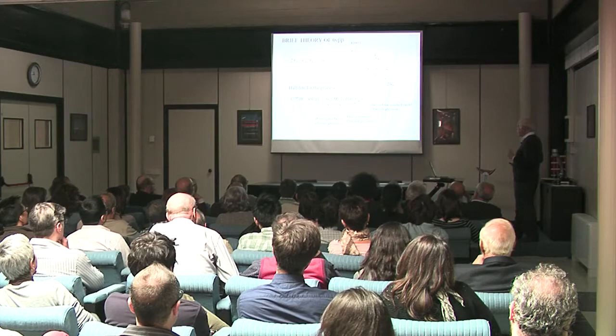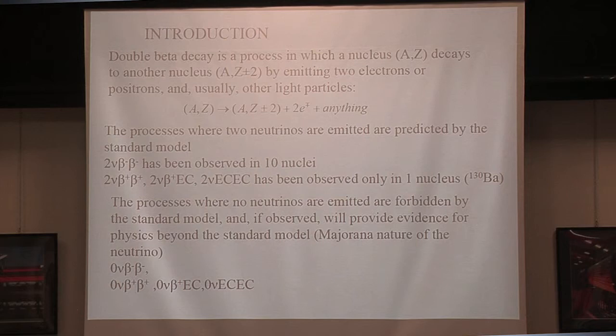Double beta decay is a process in which a nucleus A-Z decays to another nucleus, A-Z plus or minus 2, by emitting two electrons or positrons and usually other light particles. And if observed, they will provide evidence for physics beyond the standard model, in particular about the Majorana nature of the neutrino.